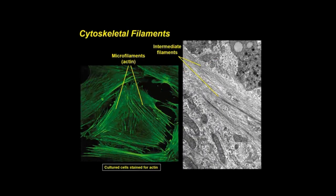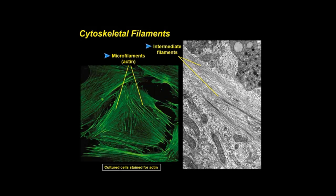The cytoskeleton also contains intermediate filaments, which are 8 to 12 nanometers in diameter and form wavy bundles in the cytoplasm, providing mechanical support and flexibility. Microfilaments include actin filaments and have cytoskeletal and motility functions. They are also flexible and can transmit forces contributing to cell movement by interacting with thick myosin filaments.